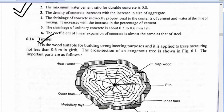Timber is the wood suitable for building or engineering purposes. It is applied to trees measuring not less than 0.6 meter in girth. The cross section of an exogenous tree is shown in figure, where the cross section of a tree is illustrated.